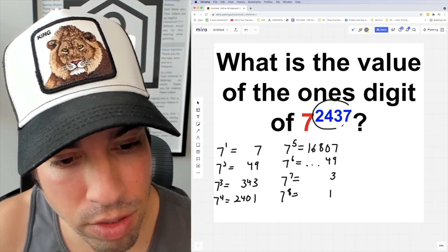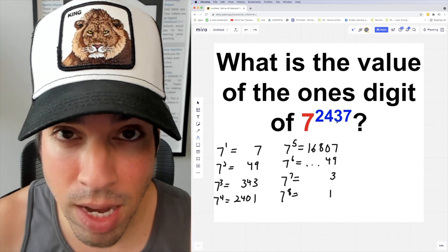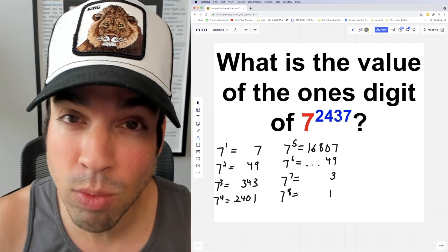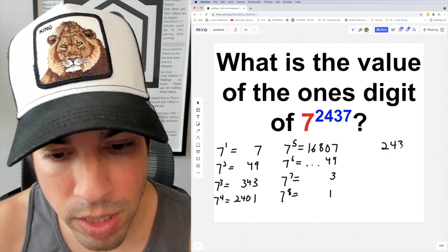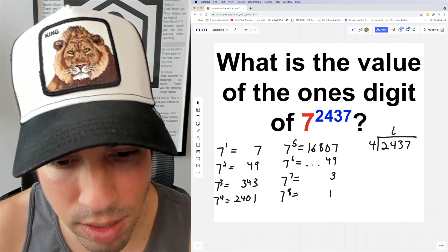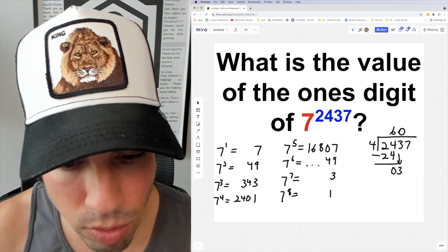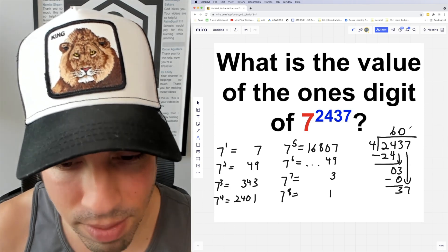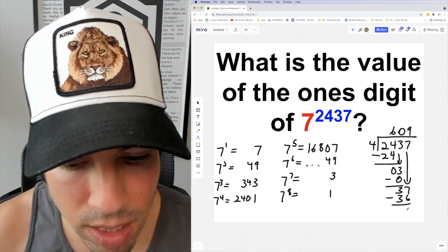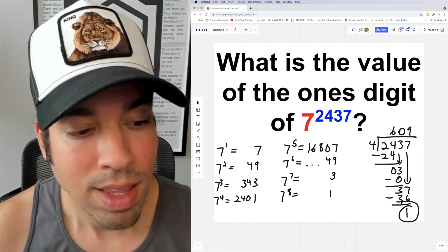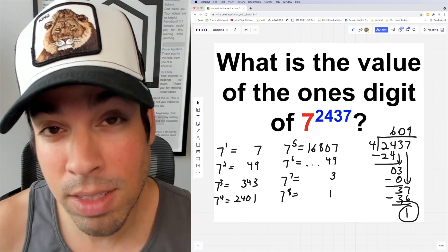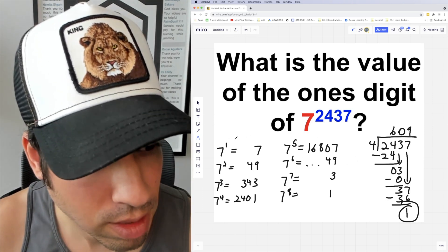So now how do I figure out what the ones digit is for this exponent? All we've got to do is divide by 4 and find the remainder, and that will give us our answer. 2437 divided by 4: it goes in 6 times, goes into 3 zero times, and 4 goes into 37 nine times, and we get a remainder of 1.